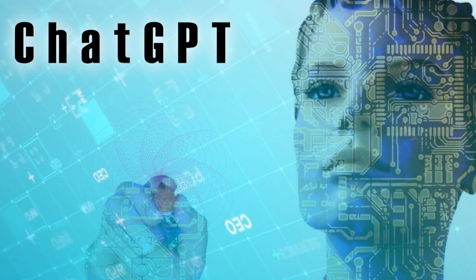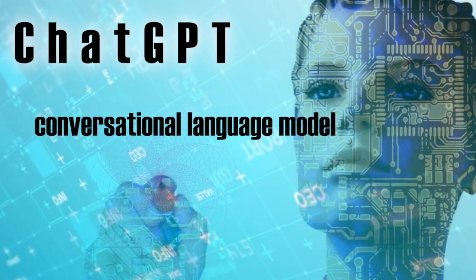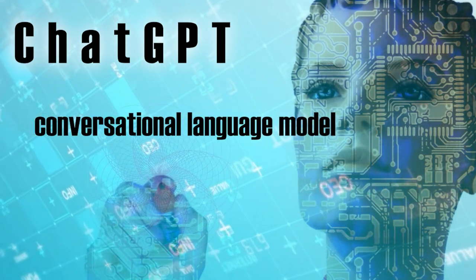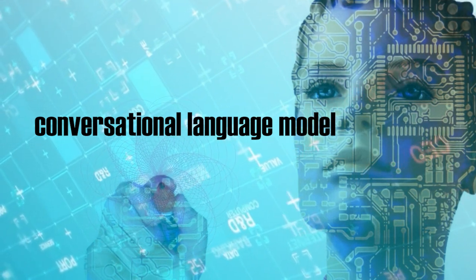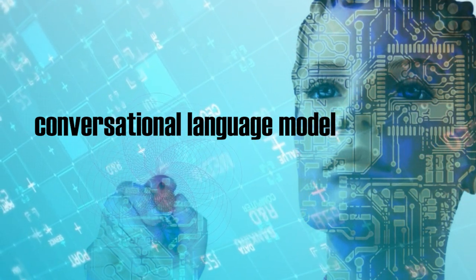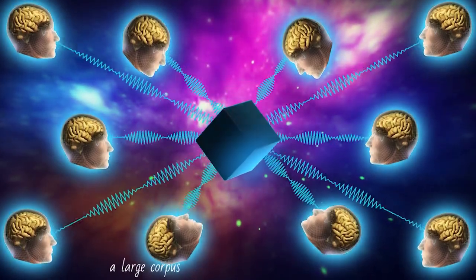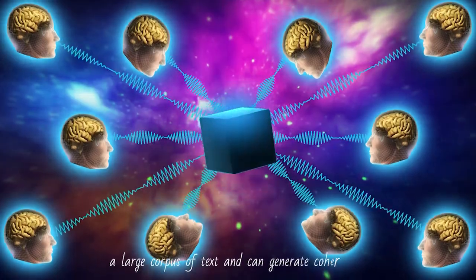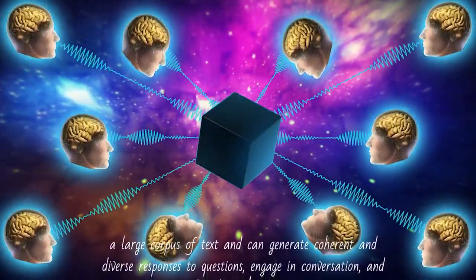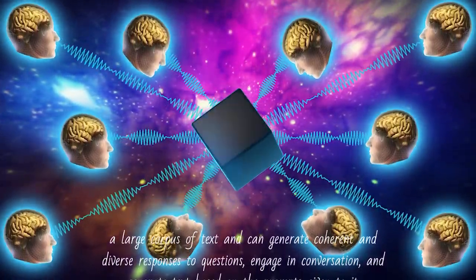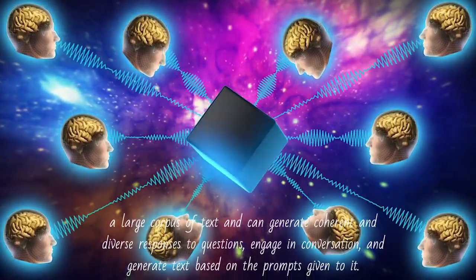On the other hand, ChatGPT is a conversational language model that uses deep learning algorithms to respond to user inputs in a conversational manner. It's also trained on a large corpus of text and can generate coherent and diverse responses to questions, engage in conversation, and generate text based on the prompts given to it.